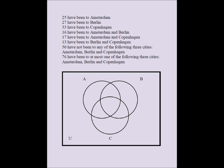Let's see if we can use the information given in the question to fill out the Venn diagram. 25 have been to Amsterdam, so 25 goes here with parentheses to indicate it's the sum of the entire Amsterdam circle. 27 have been to Berlin, so 27 goes here — it is the sum of those four regions in the Berlin circle.